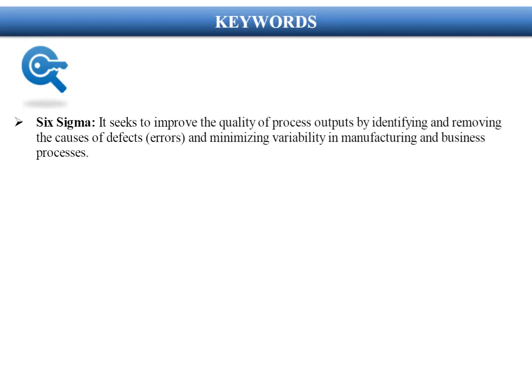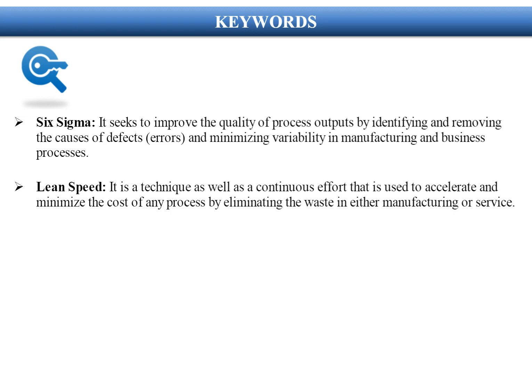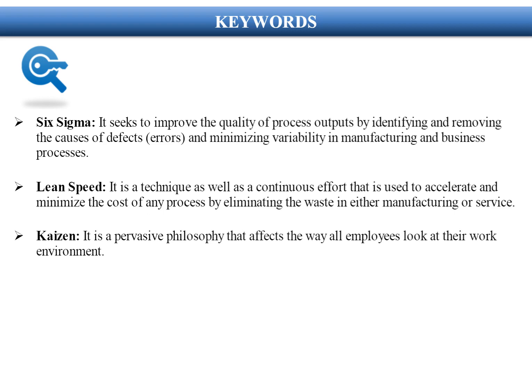Six Sigma seeks to improve the quality of process outputs by identifying and removing the causes of defects, errors, and minimizing variability in manufacturing and business processes. Lean Speed is a technique as well as a continuous effort used to accelerate and minimize the cost of any process by eliminating waste in either manufacturing or service. Kaizen is a pervasive philosophy that affects the way all employees look at their work environment.